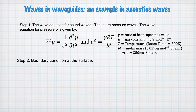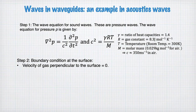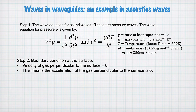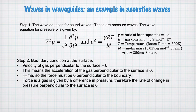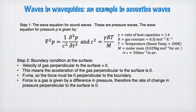The boundary condition at the surface is that the velocity of the gas perpendicular to the surface is zero, otherwise it would pass through the hard surface. This means the acceleration perpendicular to the surface is also zero. By Newton's second law, the force must be zero perpendicular to the boundary. Since the force in the gas is given by a difference in pressure, the rate of change of pressure perpendicular to the surface must be zero.